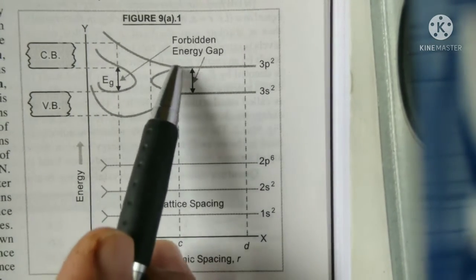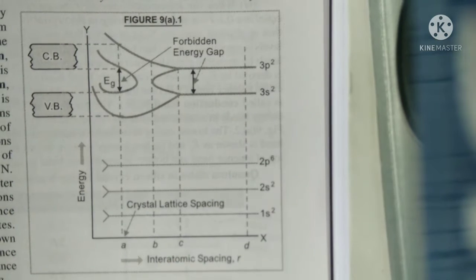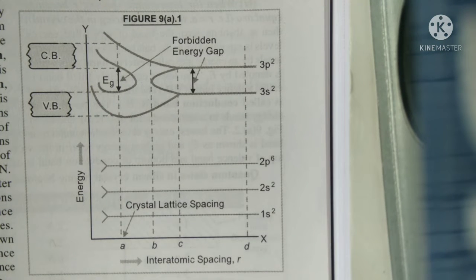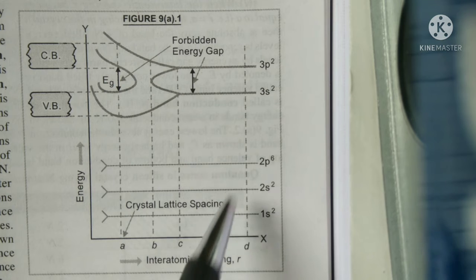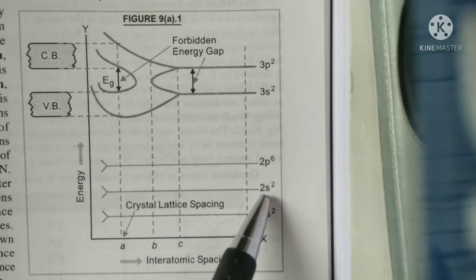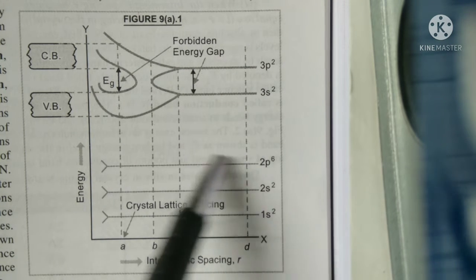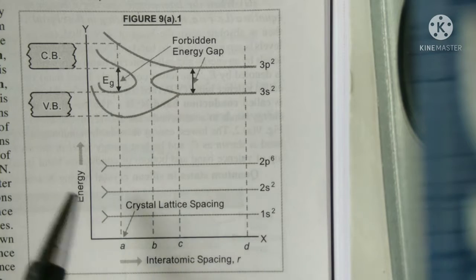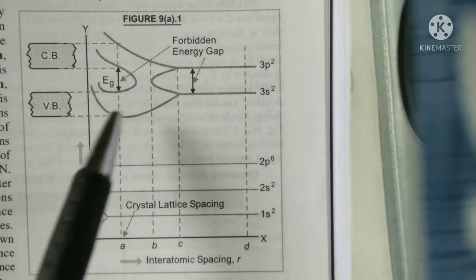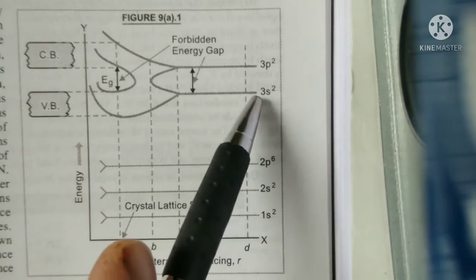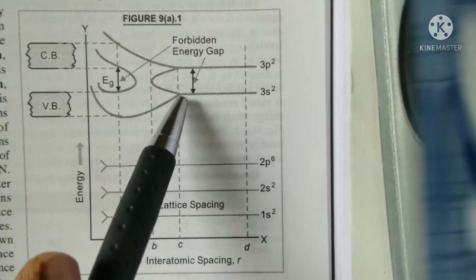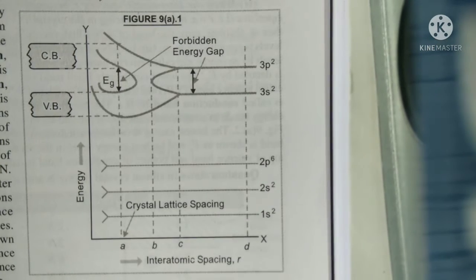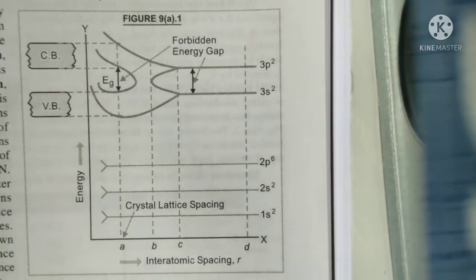The splitting of energy levels commences and there is no change in the energy levels of inner shells. The inner shells 1s, 2s, 2p, their corresponding energy levels do not change. The change starts in the outer shell electrons, from 3s level and 3p level correspondingly, a slight change starts.